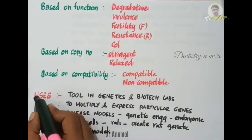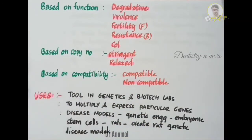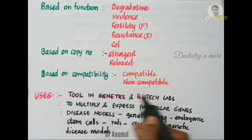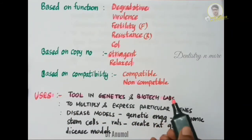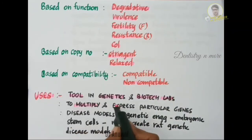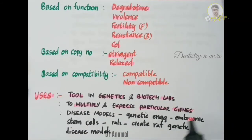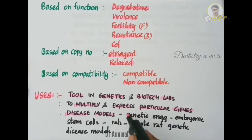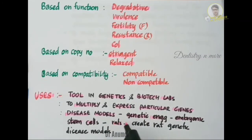Moving on to the uses of bacterial plasmids. They are used as tools in genetic and biotechnology labs — commonly used in genetic engineering to multiply and express particular genes, usually the gene of interest. They can also be used as disease models, for example for genetic engineering of embryonic stem cells in rats to create rat genetic disease models.